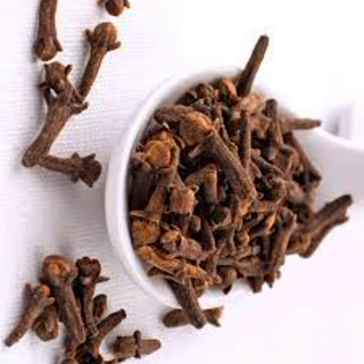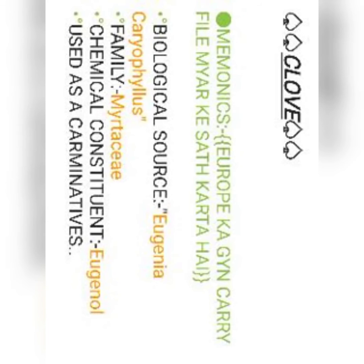The last one is clove — इसको हम लौंग बोलते हैं — जो गरम मसाले में रहता है. Part used is buds — spelling B-U-D-S. Mnemonic: यूरोप का zing, caryophyllus mare के साथ करता है. Biological source: Eugenia caryophyllus — थोड़ा tough है but बार बार लिखने से easy हो जाता है. Family: Myrtaceae. Chemical constituent: eugenol. Use: carminative.